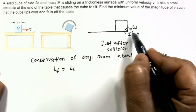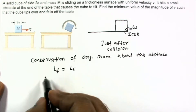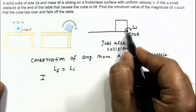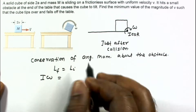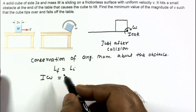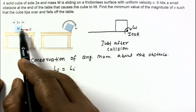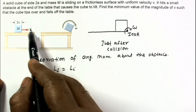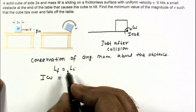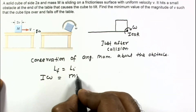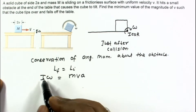After the collision it is in pure rotation, so we write the angular momentum as I about this point multiplied by omega. This equals L_initial, which is purely due to translational motion. Since the cube has side 2a, the perpendicular distance from the obstacle to the velocity is a. So L_initial = m·v·a.